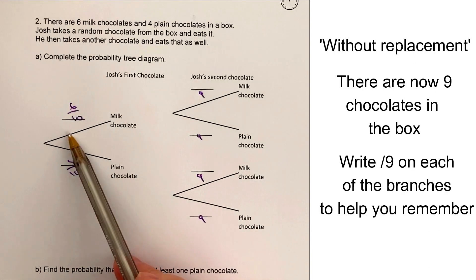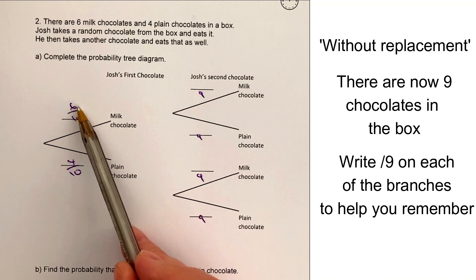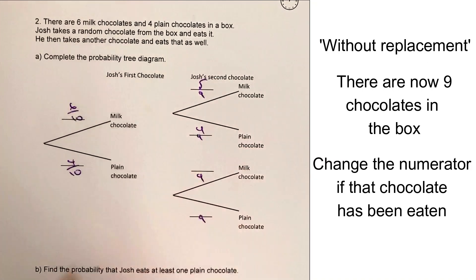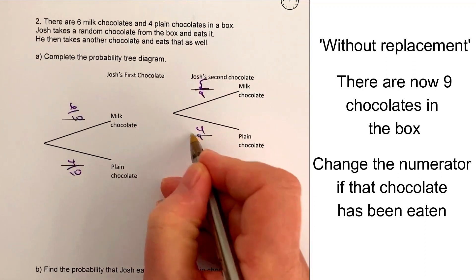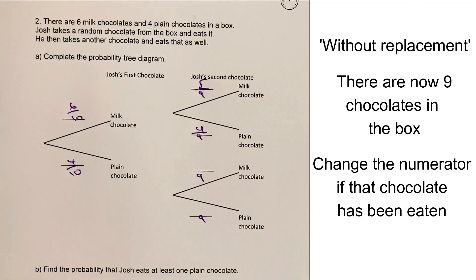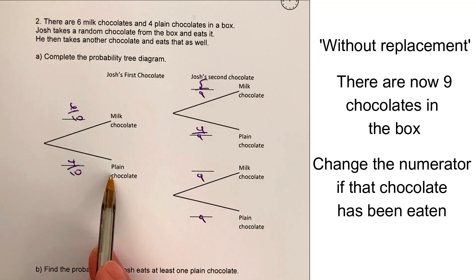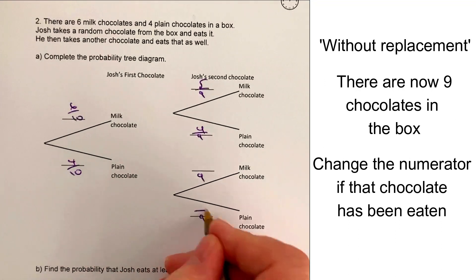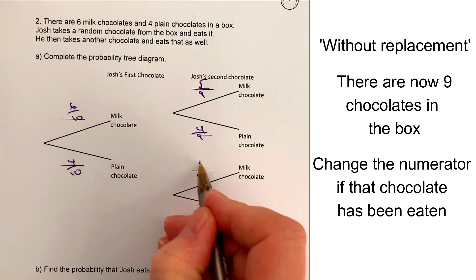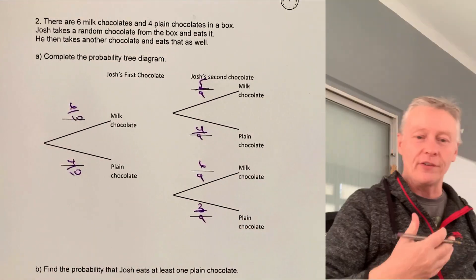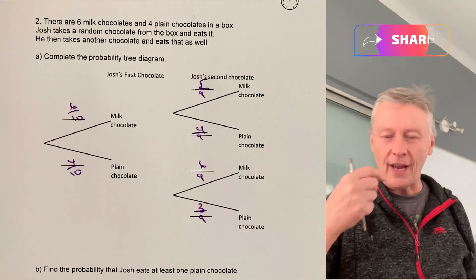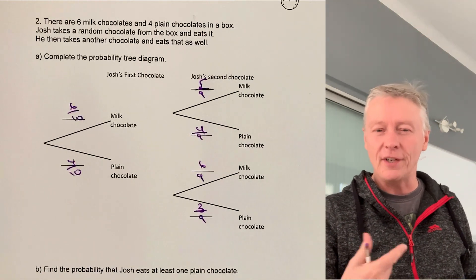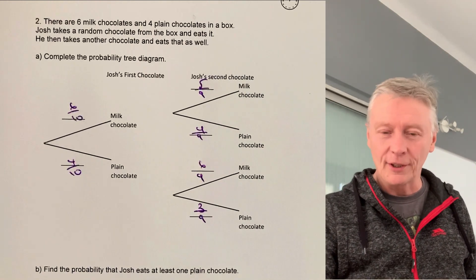When filling out the probability tree, if he ate milk first — there were 6, now there are 5, but still 4 plain — so that's 5 out of 9 and 4 out of 9. If he had a plain one first — there were 4, now 3, but there are still 6 milk chocolates — giving 6 out of 9 and 3 out of 9. Follow that pattern to fill out the second branch.